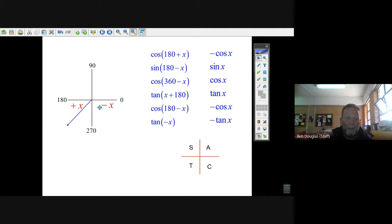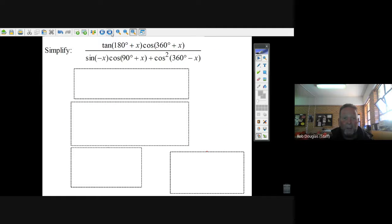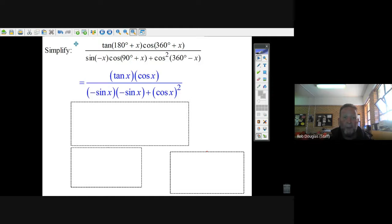So looking at our question, 180 plus x, that takes us to this quadrant right here. Now if I minus x, I just go to where the angle is and I go clockwise. I do a half turn and I'll always get to the right place. So that's why this question here, 180 plus x, I'm in the third quadrant.